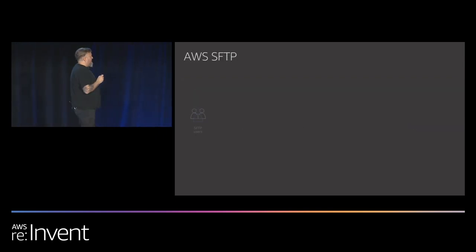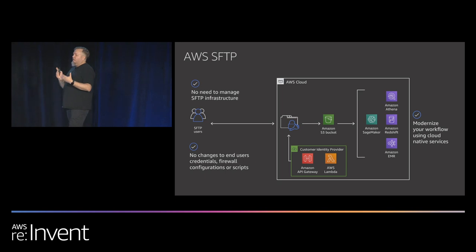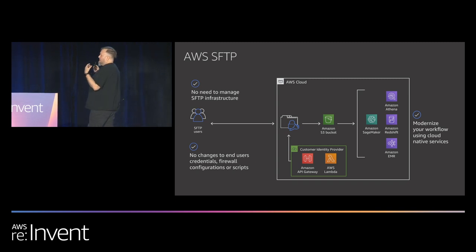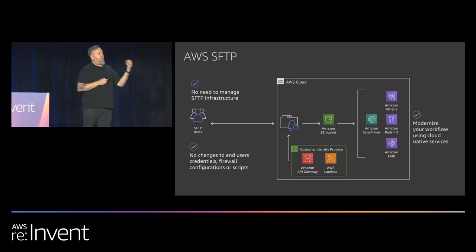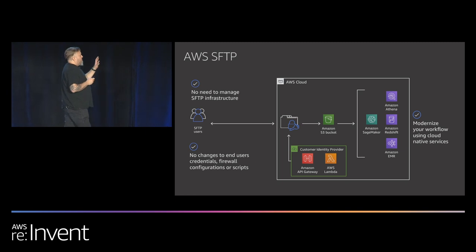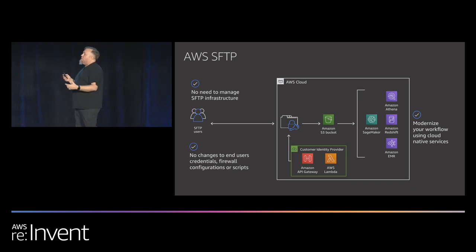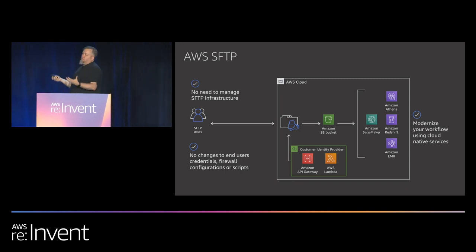Lightning round: Transfer for SFTP. We launched this last year. It gives you the ability to stand up a fully managed SFTP server inside AWS. You can bring your own authentication service and hostname — it connects to an S3 bucket on the back end. Customers were building their own Linux FTP and SFTP servers and figuring out how to connect them to S3, so with AWS Transfer for SFTP you get a fully managed environment with access to CloudTrail, CloudWatch, and all the AWS management tools you're already using.